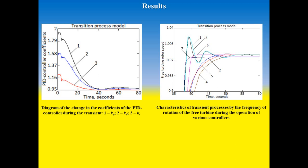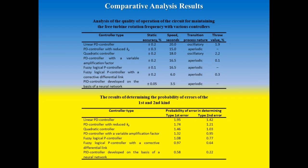Right figure shows a diagram of the joint arrangement of the transient curves according to the free turbine speed during the operation of various controllers. First table presents a numerical analysis of the quality of operation of the circuit for maintaining the free turbine speed with various controllers.